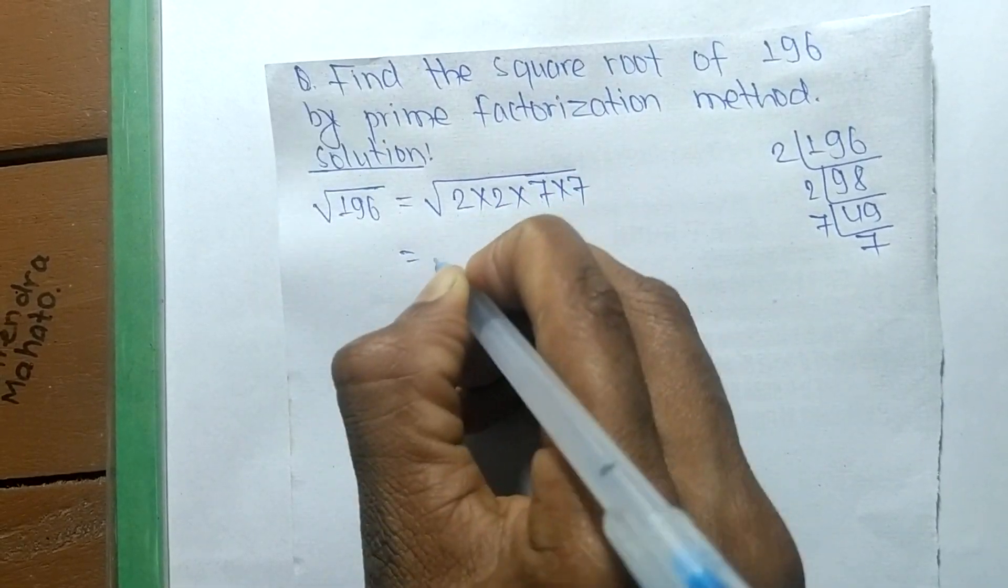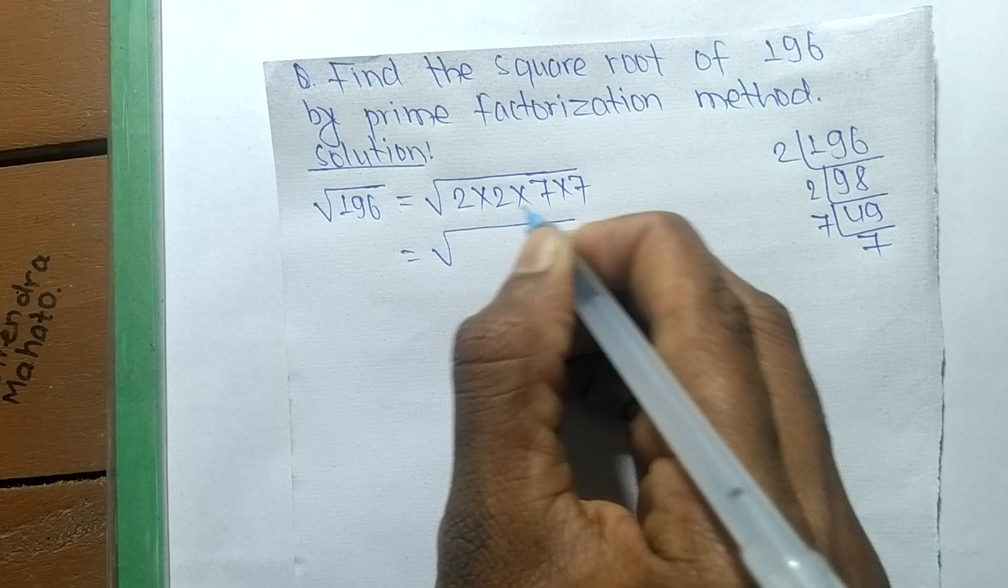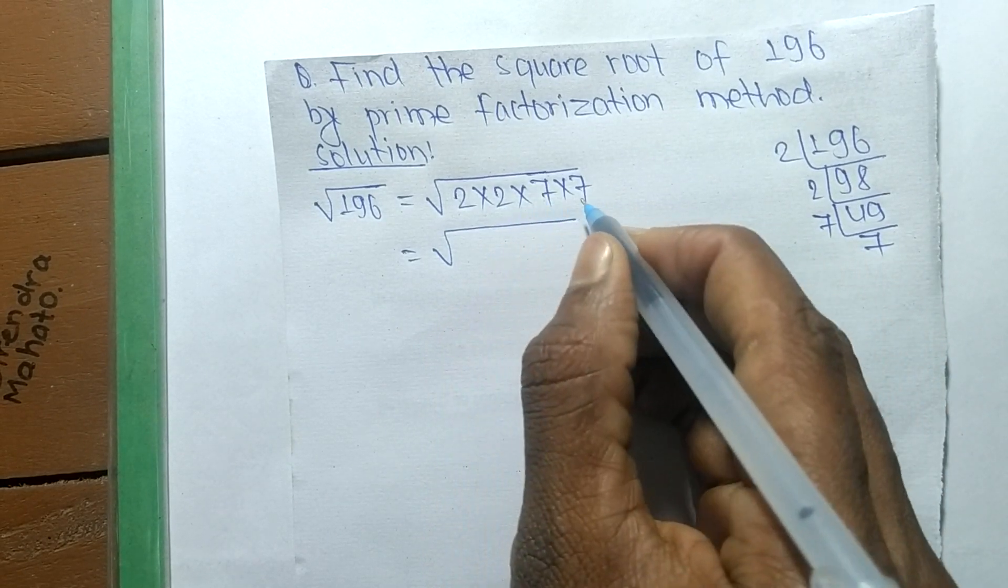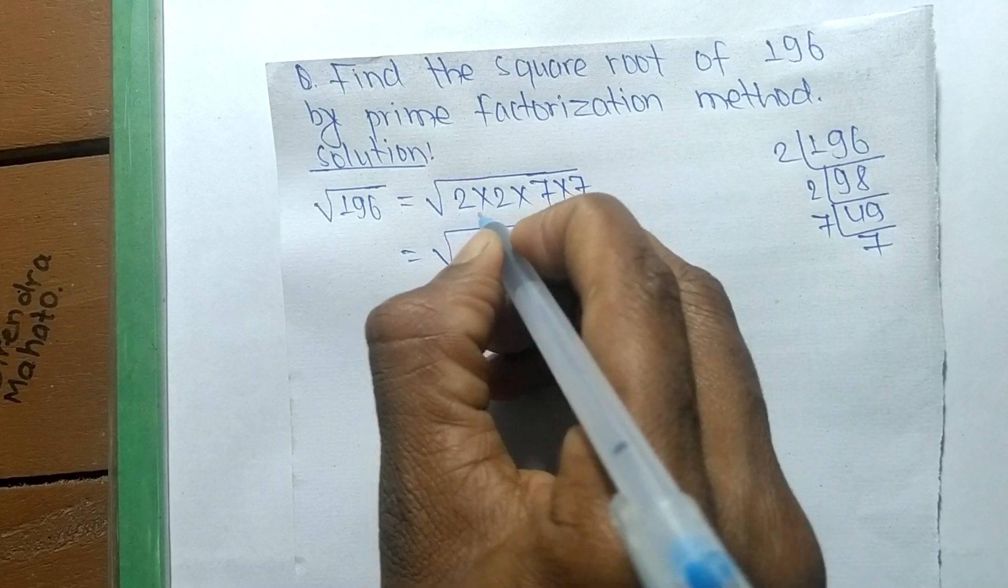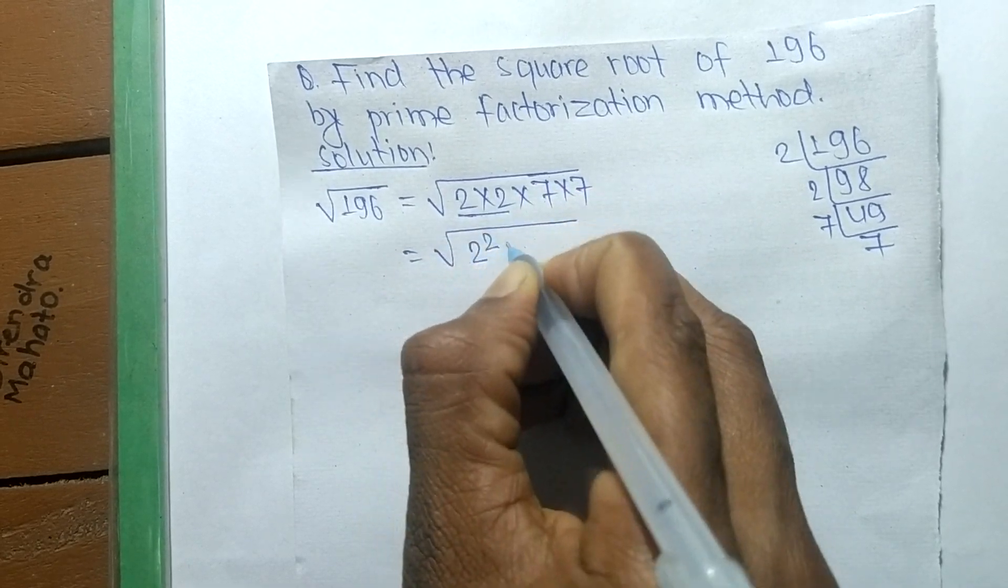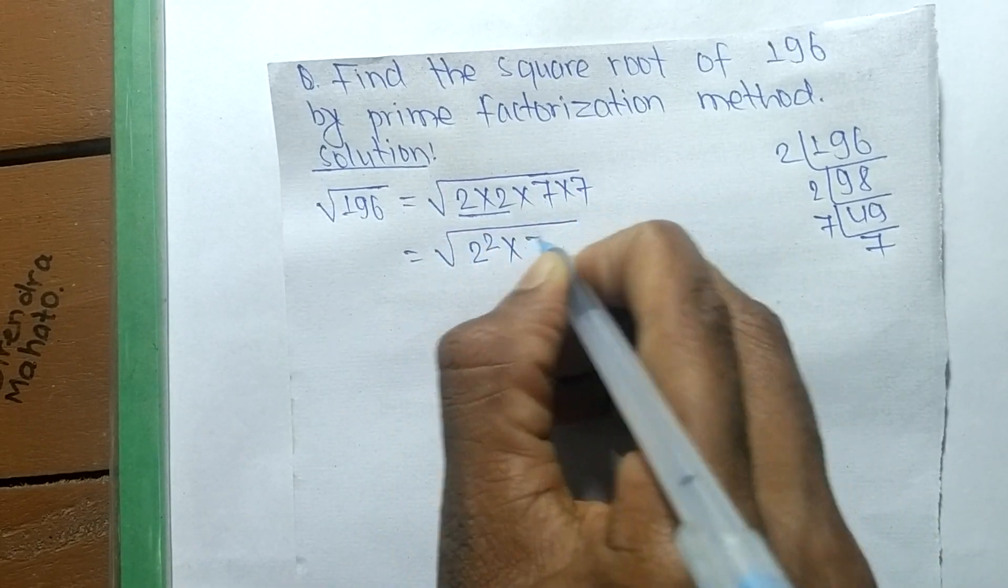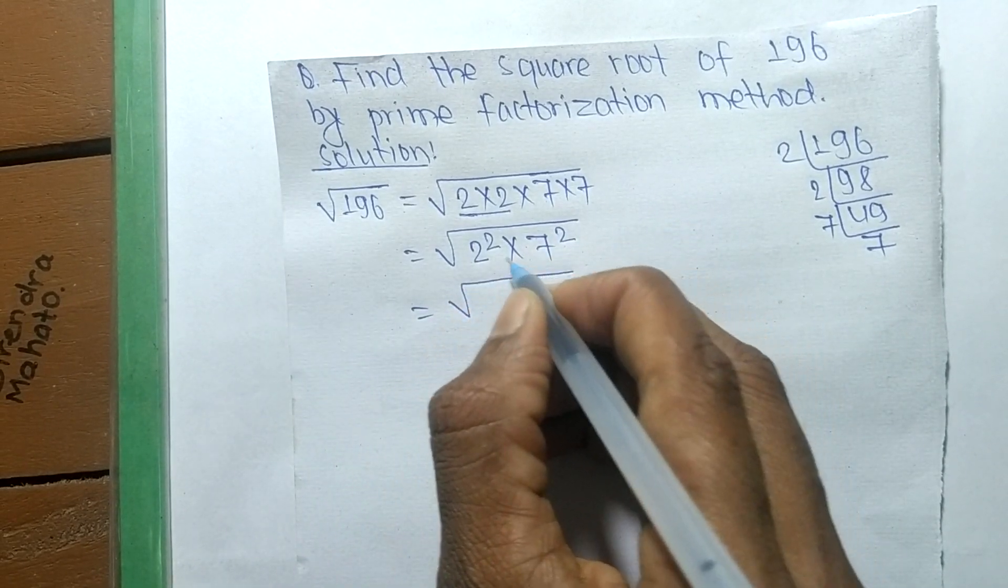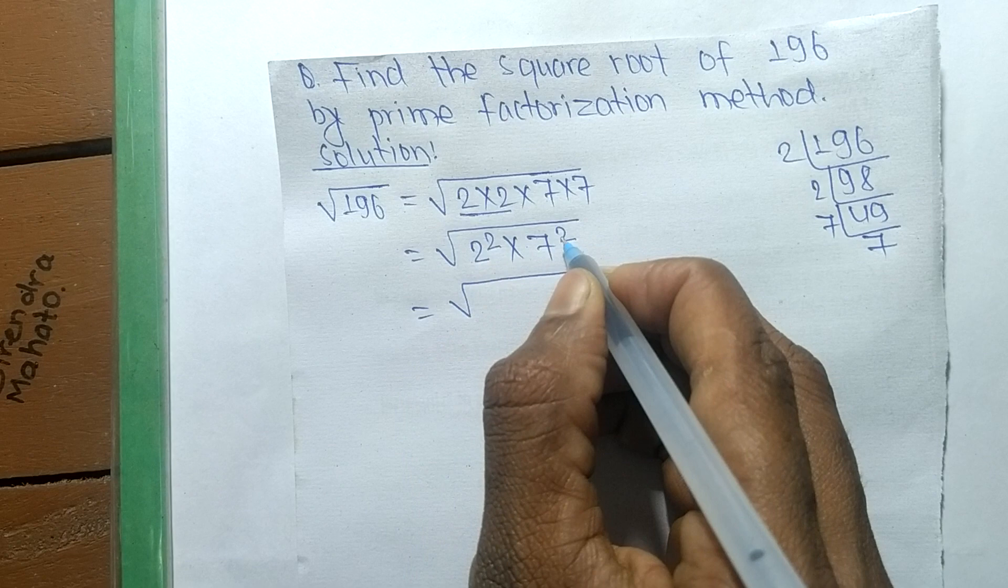After writing all the prime factors, now we make the square of all these prime factors. So 2 into 2 is 2 square, and 7 times 7 is 7 square. So square is present in both, so we take here a square as a common.